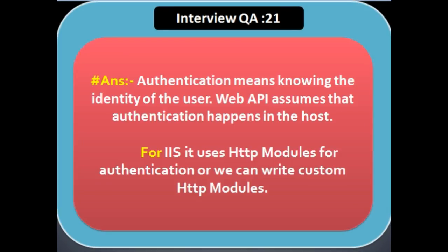When the host authenticates the user, it creates a principal, and the host — that is IIS — attaches the principal to the current thread by setting Thread.CurrentPrincipal. The principal contains an associated identity object with information about the user. If the user is authenticated, Identity.IsAuthenticated is true. Authentication means knowing the identity of the user. Web API assumes that authentication happens in the host.